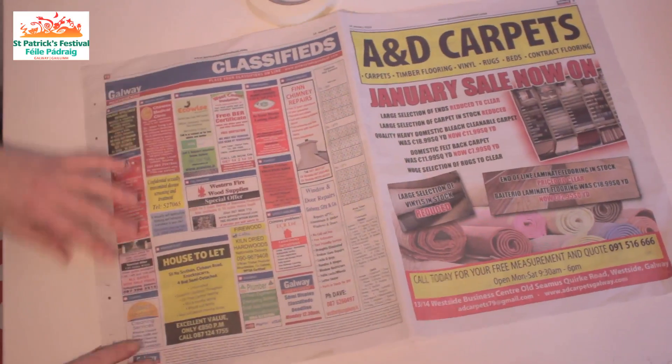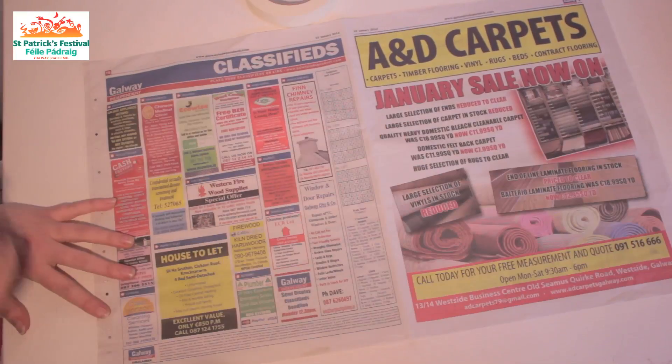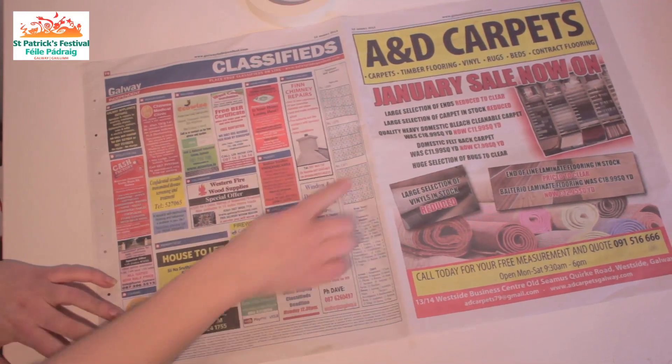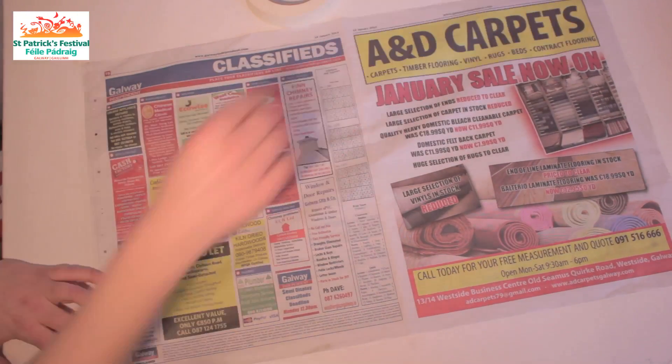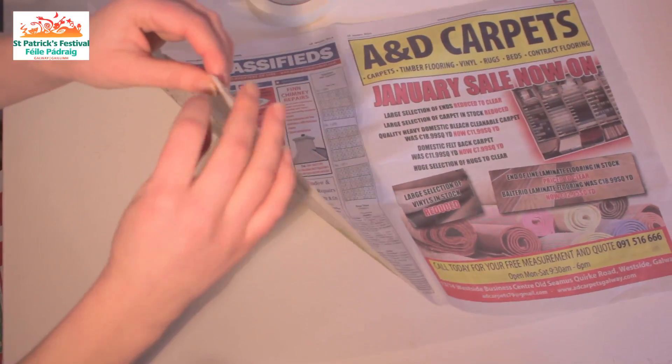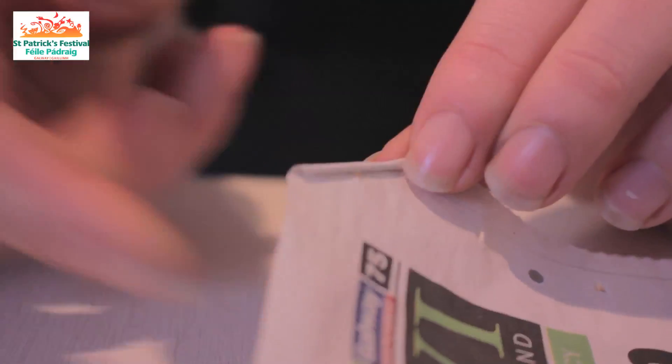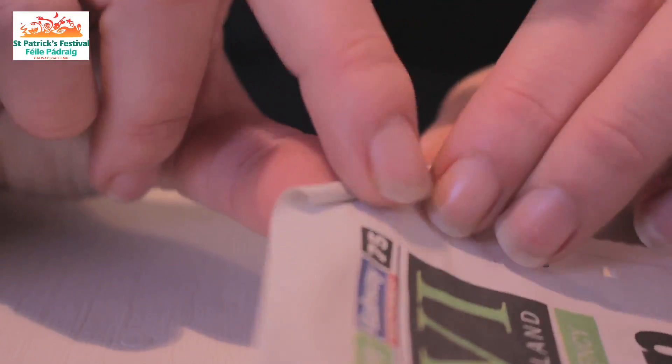Okay, one sheet of newspaper and from corner to corner. So the first thing you do is you get the corner and start off the edge by rolling it.